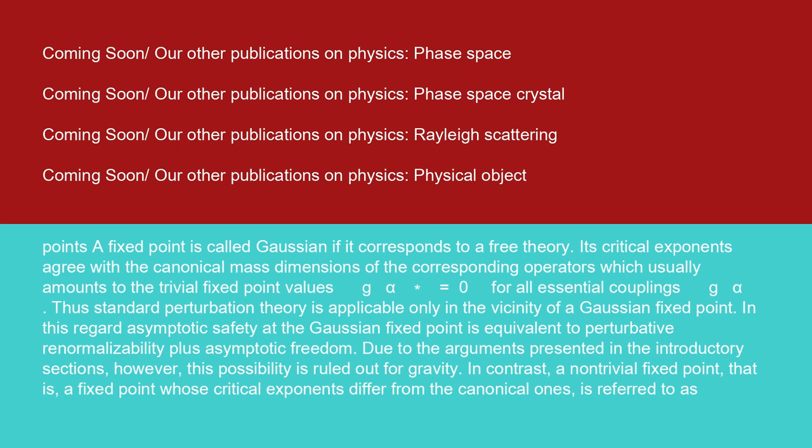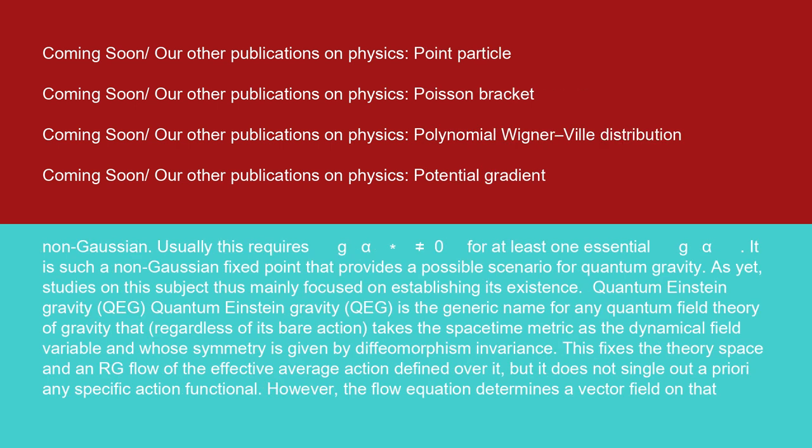In contrast, a non-trivial fixed point, that is a fixed point whose critical exponents differ from the canonical ones, is referred to as non-Gaussian. Usually, this requires G_α* is not equal to zero for at least one essential G_α. It is such a non-Gaussian fixed point that provides a possible scenario for quantum gravity. As yet, studies on this subject thus mainly focused on establishing its existence.